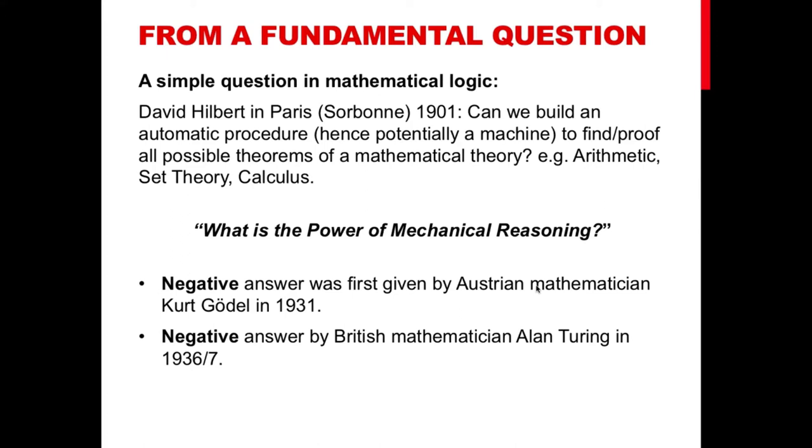Gödel's answer was in the negative, proving that there is not such a way to derive all possible truths from a theory without getting into contradictions. Alan Turing also gave the same answer in the negative, but showing that if one assumes that one can construct a machine of such a kind to prove all mathematical theorems, then one gets into a contradiction as we will see later, so very much in the sense of Kurt Gödel.